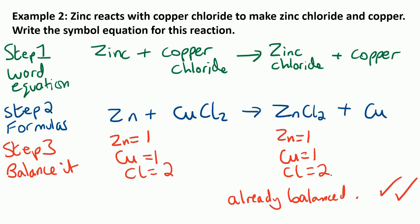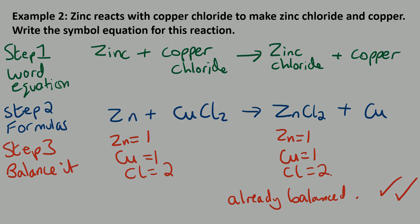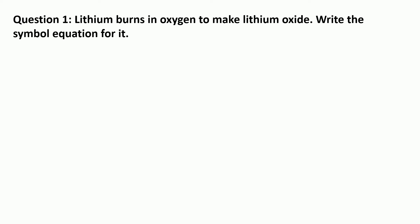So the next section of the video we're going to have a go at a couple of practice questions. The best way to check your understanding is to have a go. Question one: lithium burns in oxygen to make lithium oxide. Write the symbol equation for it. Pause the video, have a go, remember to break it down into three simple steps, and then resume the video to see how you got on.